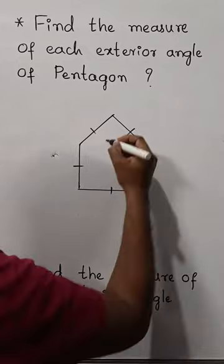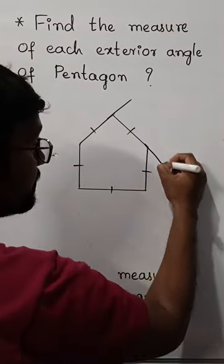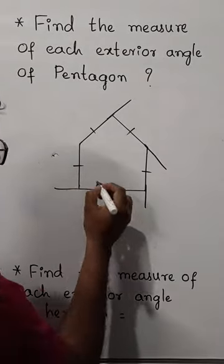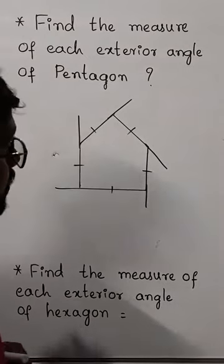And here each exterior angle. These are all the exterior angles. Then what is each exterior angle of the polygon?